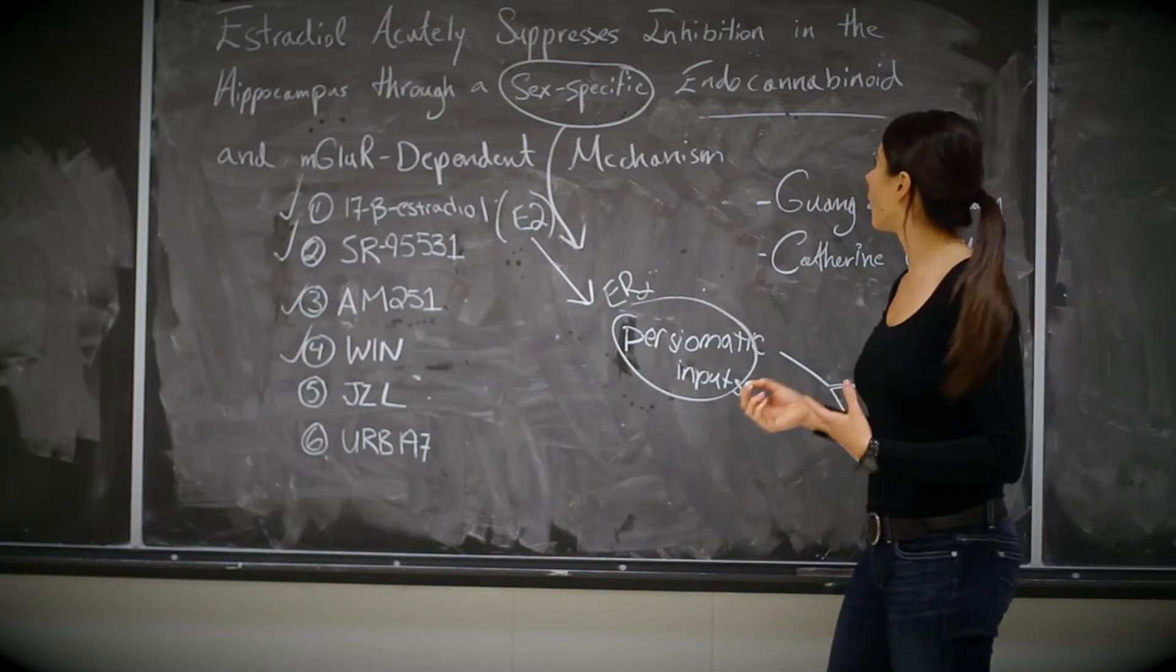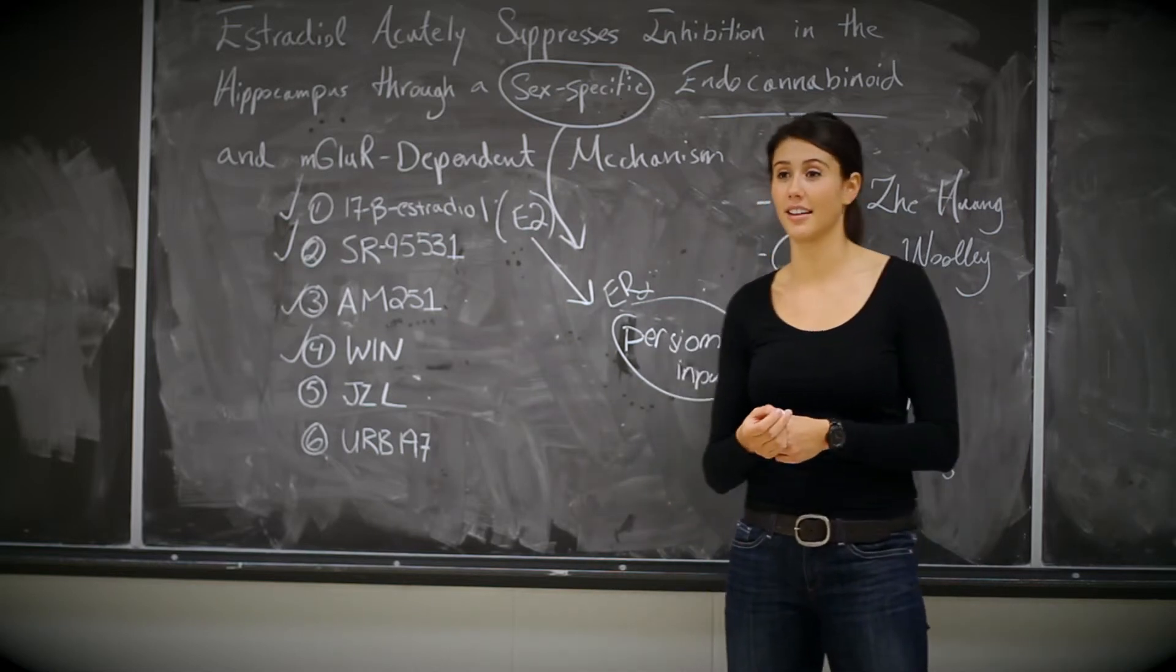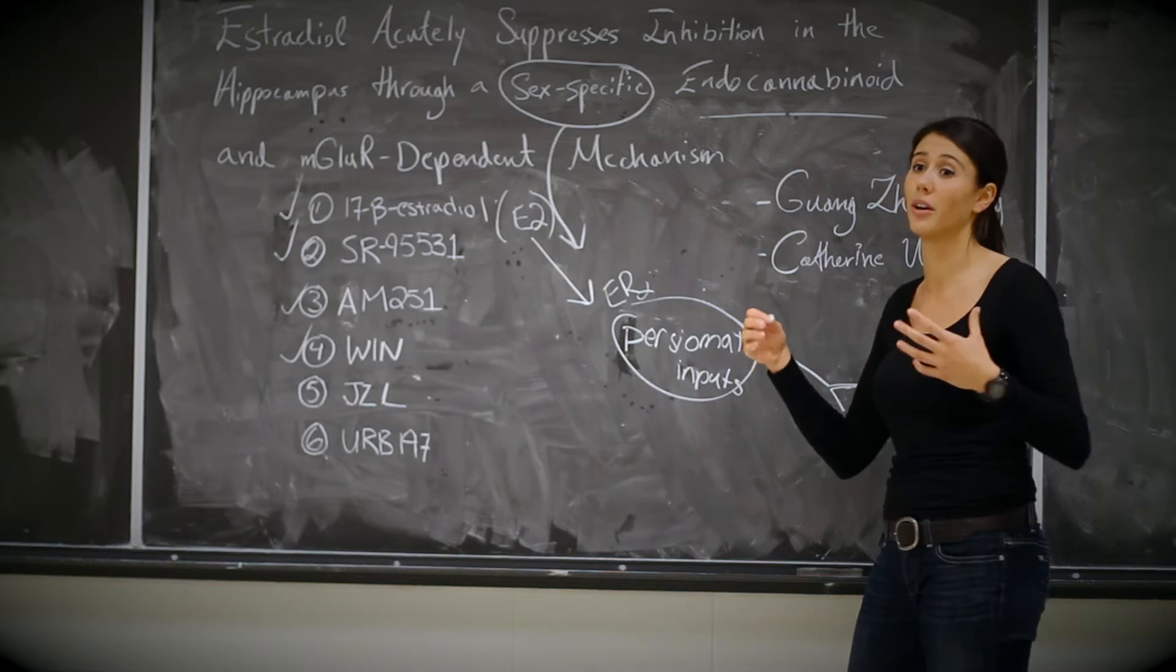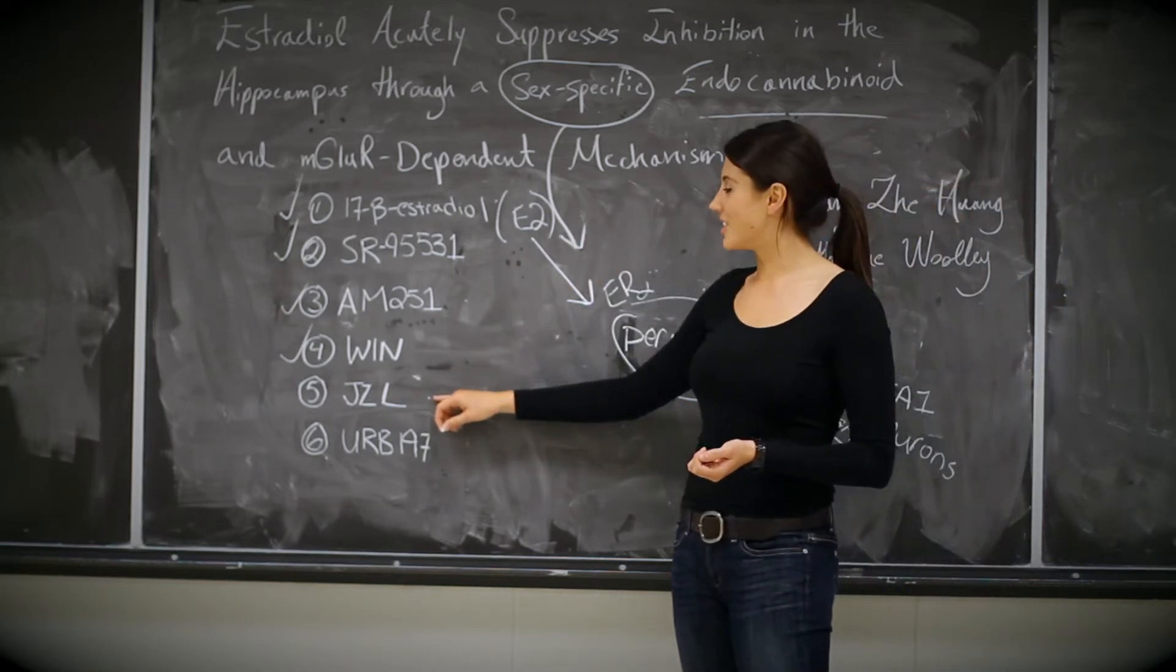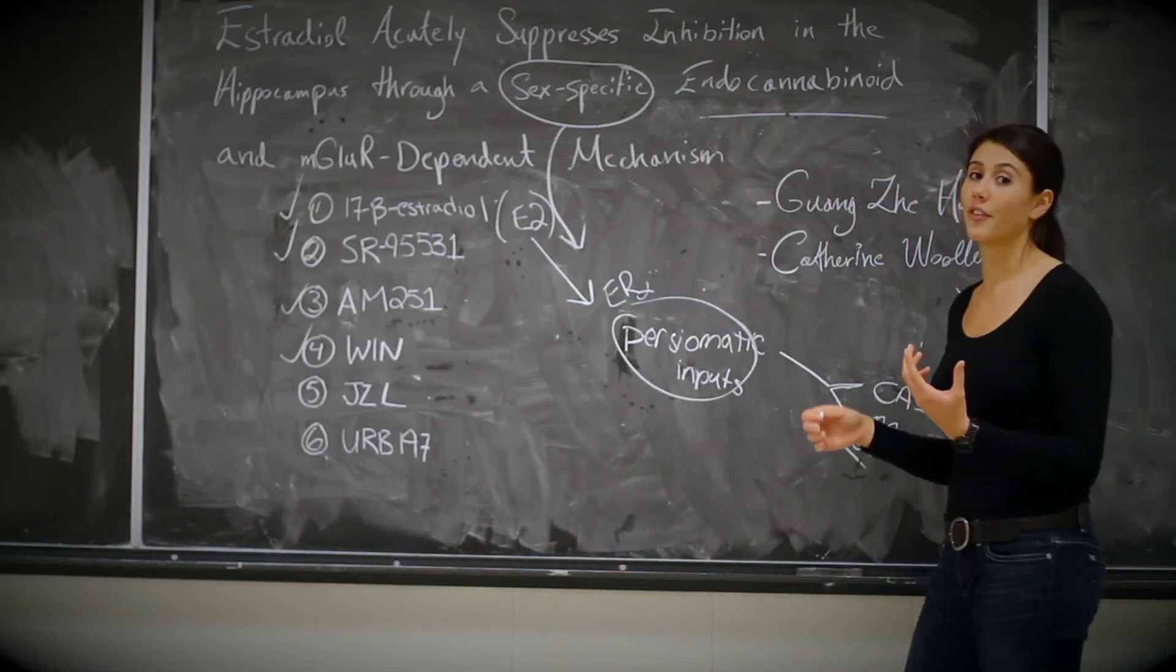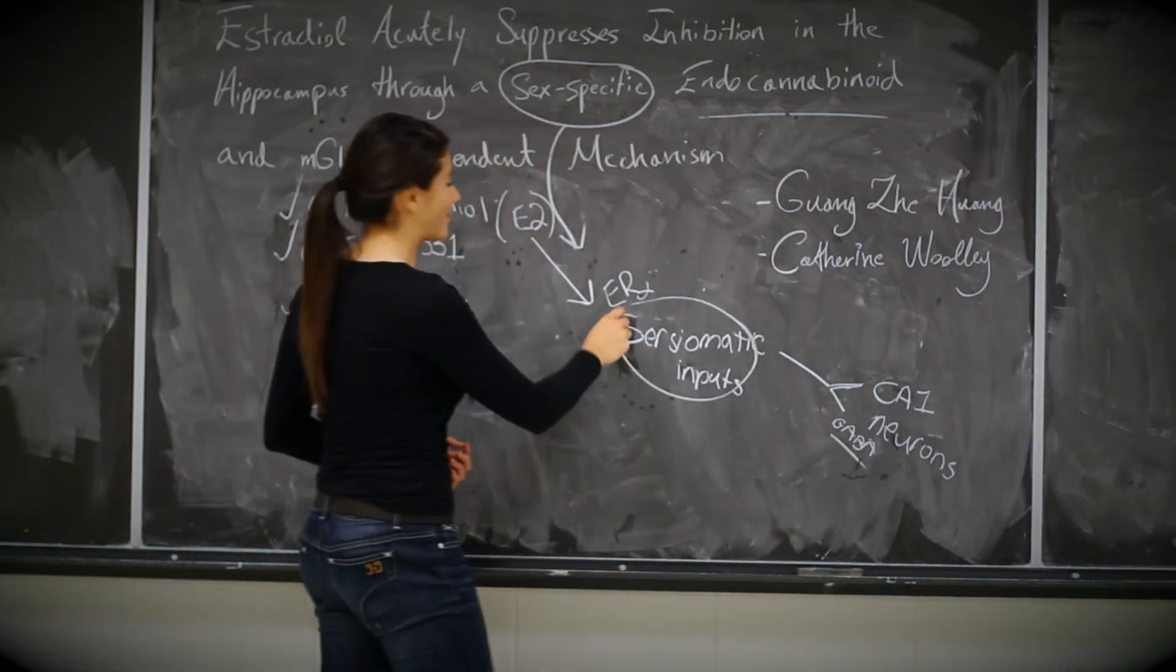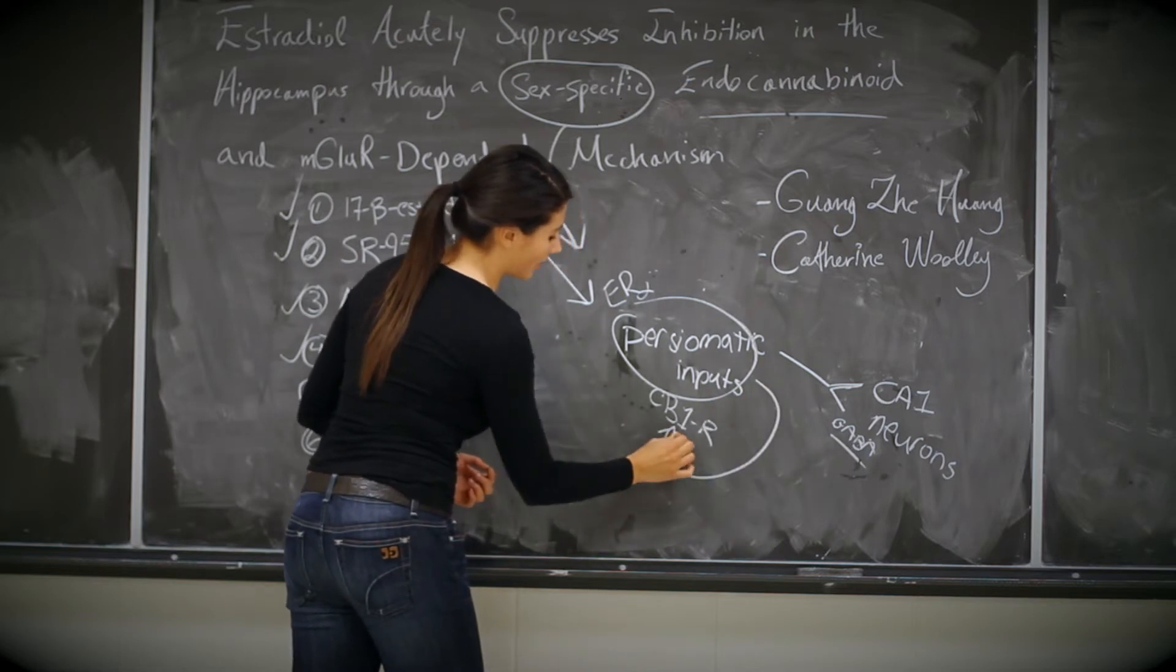Next, they wanted to figure out what type of endogenous cannabinoid is doing this signaling. Most commonly in hippocampus, 2AG does most of the retrograde endocannabinoid signaling. So they first applied a 2AG antagonist that prevents the breakdown. And by preventing the breakdown, they thought that would cause the inhibition of the CA1 disinhibition. Inhibition of disinhibition, now that's a mouthful. And when they did apply the JZL, they found that it didn't have any effect. So they know that 2AG is not involved. However, when they applied URB-197, which is specific for anandamide, it did cause no longer the disinhibition of CA1 neurons. So now they realize not only is estrogen binding to the estrogen receptor alpha subunit, but there's also CB1 receptors that are being activated by endogenous cannabinoids of anandamide.